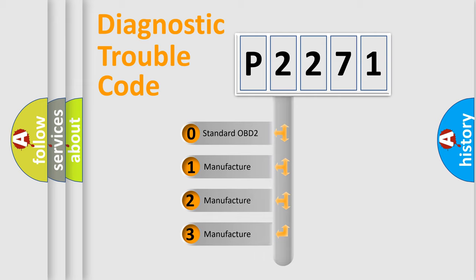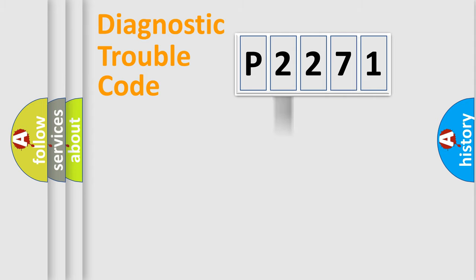If the second character is expressed as zero, it is a standardized error. In the case of numbers 1, 2, 3, it is a more specific expression of the car-specific error.